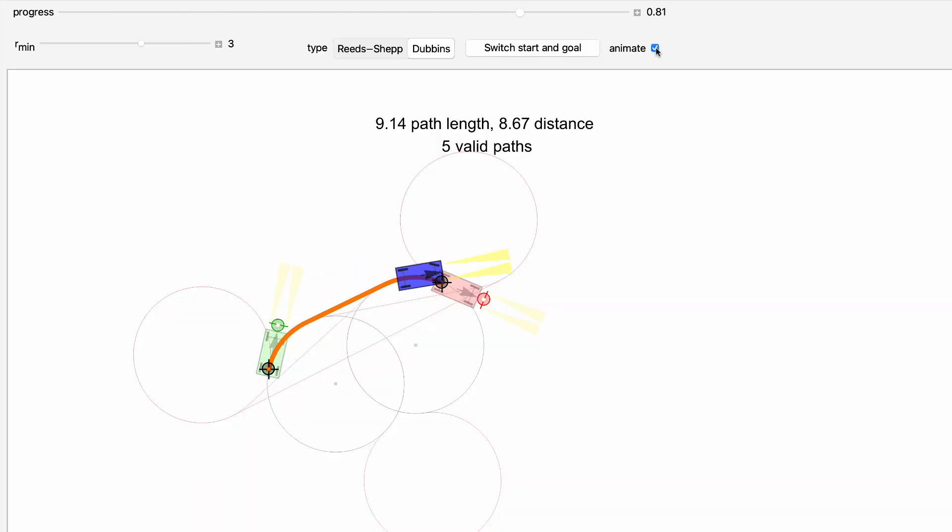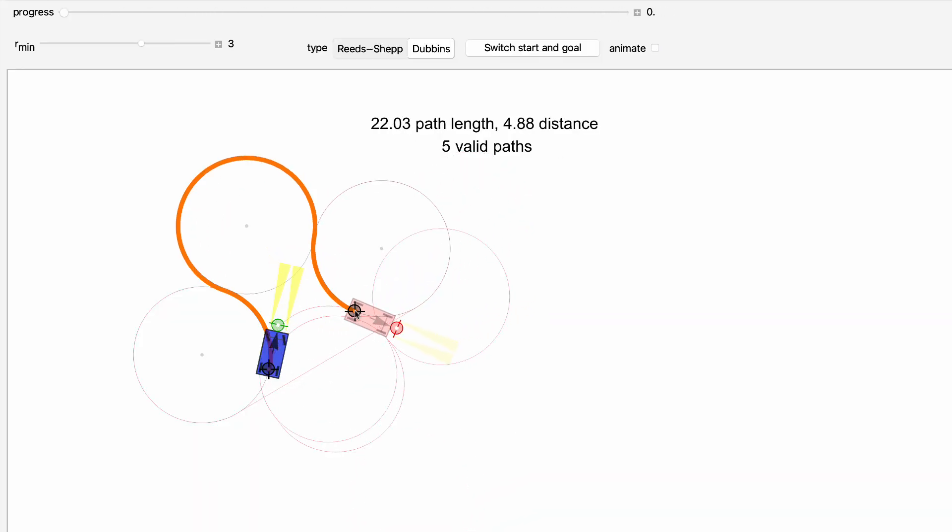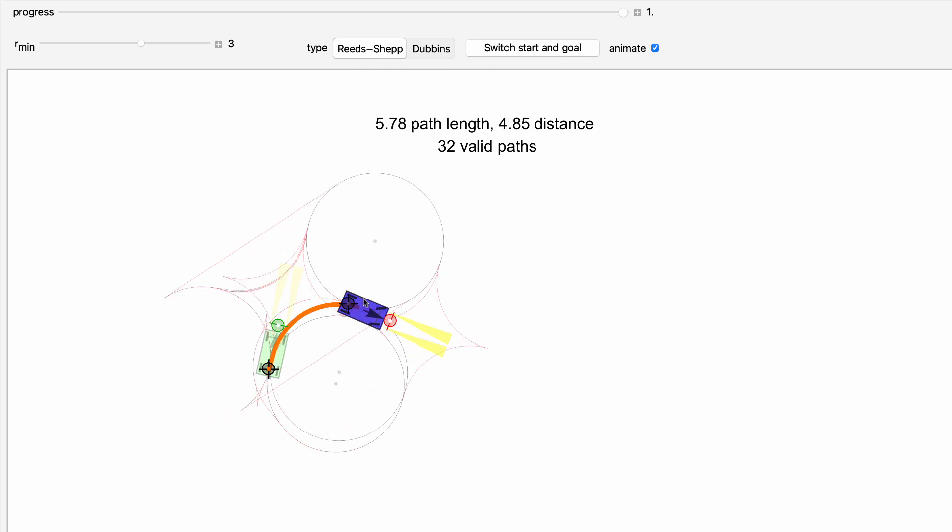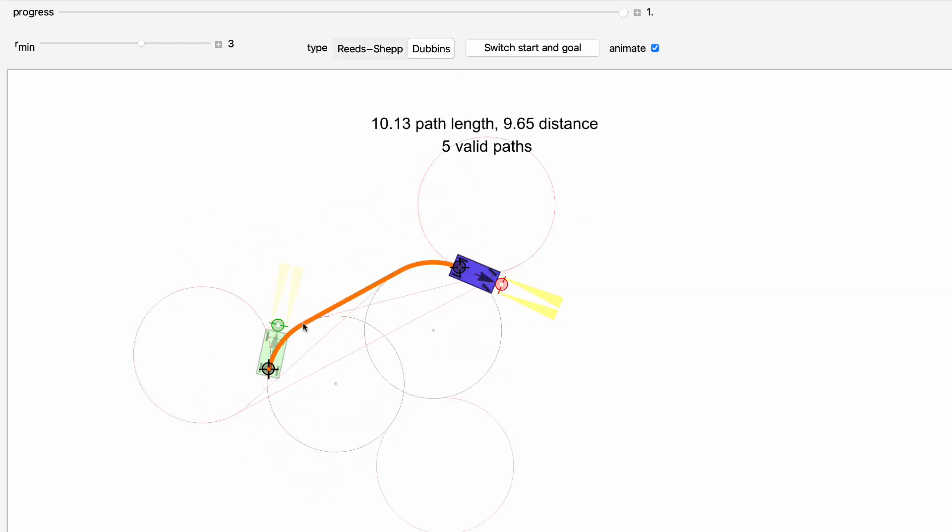With the Dubin's car, sometimes short distances require longer paths than long distances. For the Reed-Shep car, the path length always decreases as the distance decreases.